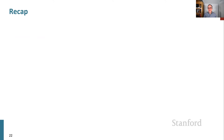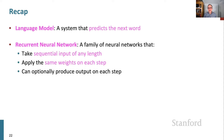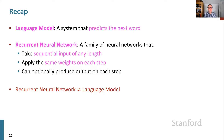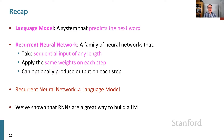A language model is just a system that predicts the next word. A recurrent neural network is a family of neural networks that can take sequential input of any length, reusing the same weights to generate a hidden state and optionally an output on each step. Note that these two things are different — we've talked about two ways to build language models, but RNNs being one great way doesn't mean RNNs can only be used for language models. Let me quickly preview a few other things you can do with RNNs.